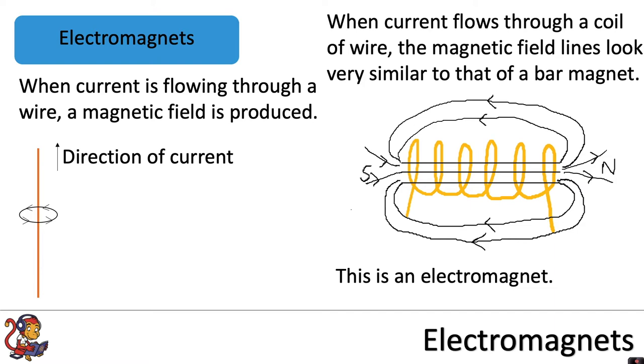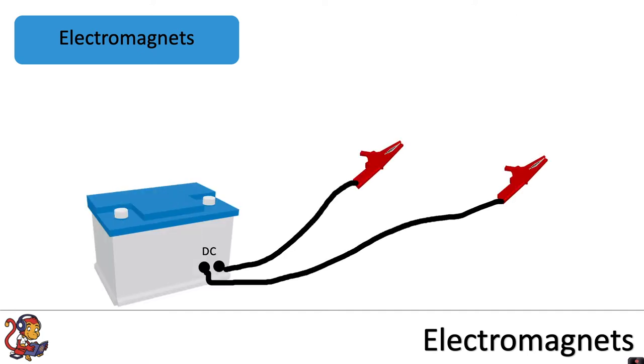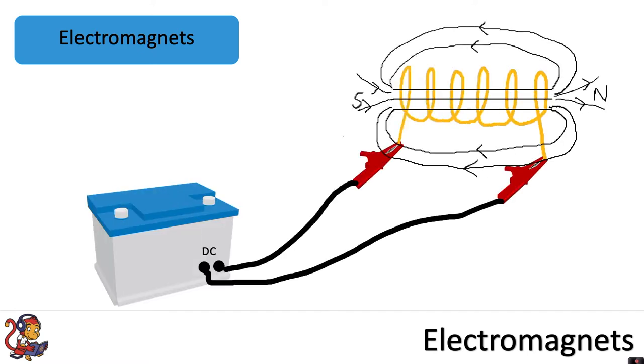What I haven't shown in the diagram is the fact that the two ends of the coil of wire would be connected to a power supply. And we can split the word electromagnet into its two parts: electro for the electricity part and magnet for the magnetism.